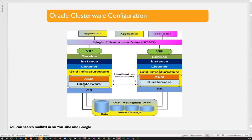Inside each cluster node, Grid Infrastructure software is the base software that forms Oracle Real Application Clusterware. Inside Grid Infrastructure, an ASM instance runs, managing communication between the database instance and ASM storage — ASM stands for Automatic Storage Management. The clusterware software runs under Grid Infrastructure. If you have a four-node cluster, all four nodes will have the same configuration — Grid Infrastructure, ASM, clusterware software are mandatory on all cluster nodes. All cluster nodes point to common shared storage where all business data resides.